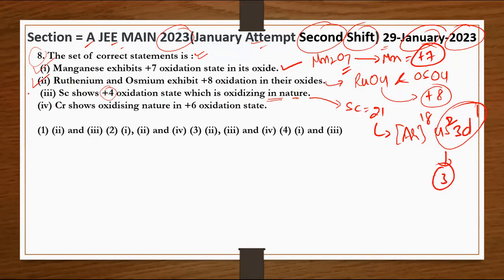तो इसका मतलब यह statement गलत है, ठीक है। Next है - Cr shows oxidizing nature in +6 oxidation state। आपको पता है कि जो Chromium की maximum oxidation state है वो +6 है। अब +6 से ऊपर तो जा ही नहीं सकता है, इसलिए कैसे करें oxidizing nature?